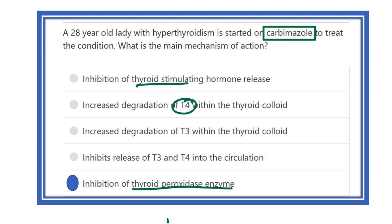T3 and T4 degradation is also not the direct mechanism. Ultimately T3 and T4 will decrease, but carbimazole does not act directly on T3 and T4. Carbimazole acts on the thyroid peroxidase enzyme, and as a result T3 and T4 are reduced indirectly.